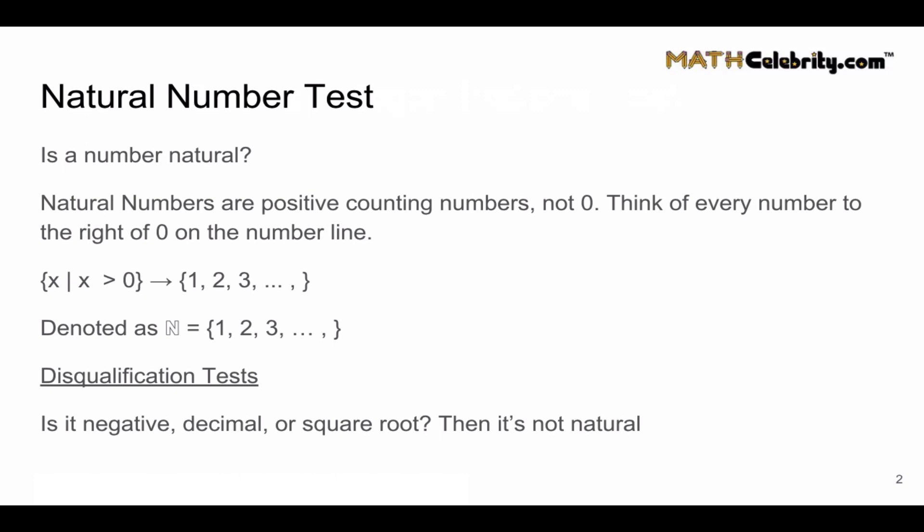Natural numbers are positive counting numbers and they exclude zero. Think of a number line where you have whole numbers and little tick marks start at one to the right of zero and keep going - all of those are natural numbers. In set notation we can write this as {x | x > 0} → {1, 2, 3, ...}.